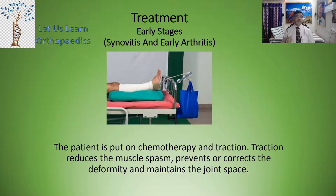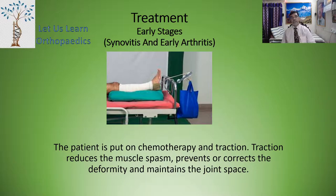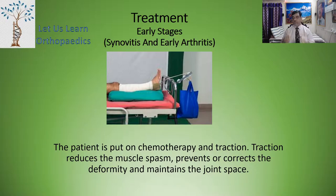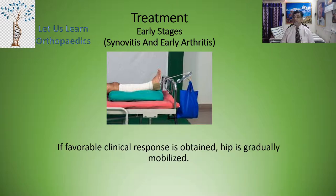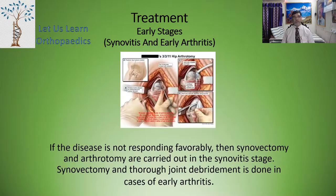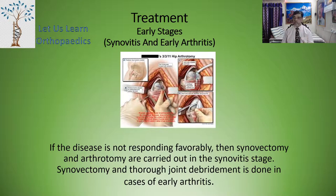Coming to the treatment part, it is divided into early stages and late stages. In early stages — which includes synovitis and Stage 2 early arthritis — the patient is put on chemotherapy and traction. Traction reduces muscle spasm, prevents or corrects deformity, and maintains joint space. If a favorable clinical response is obtained, the hip is gradually mobilized. But if the disease is not responding favorably, synovectomy or arthrotomy are carried out. In the stage of synovitis, synovectomy and thorough joint debridement is done; in cases of early arthritis, partial synovectomy and joint debridement are also done.